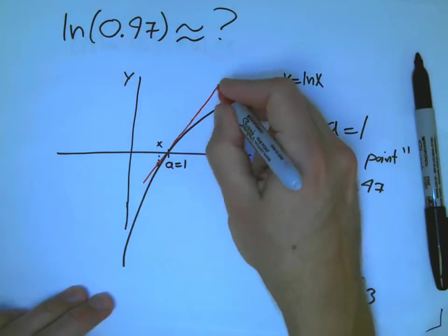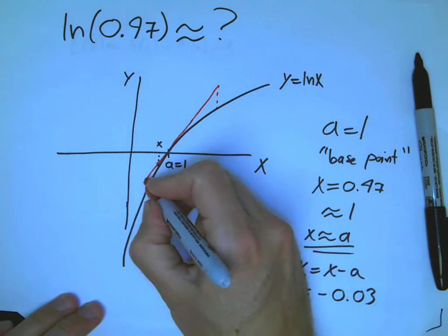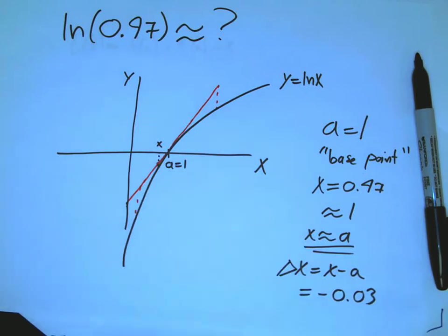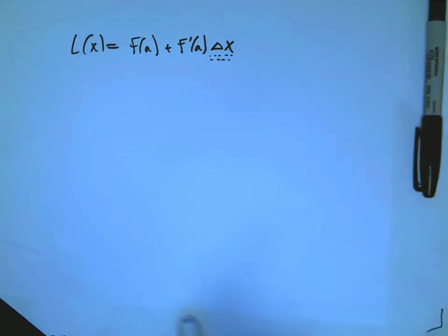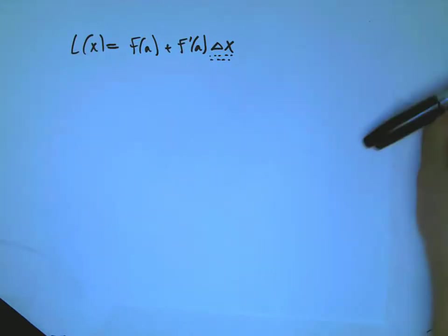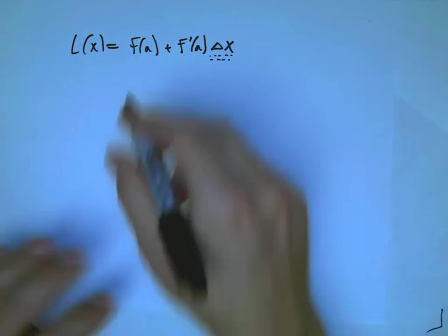If I go really far away from this base point, say to the right maybe, where the tangent line is really, really far from the function, or way to the left, where the tangent line is really far from the function, I'm getting a really crappy approximation. But, as long as I stay with delta x small, it's going to be okay.